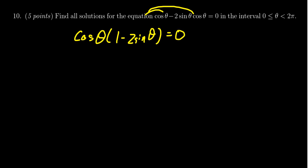We can set each factor equal to 0. We get cos(θ) = 0, and 1 - 2sin(θ) = 0.